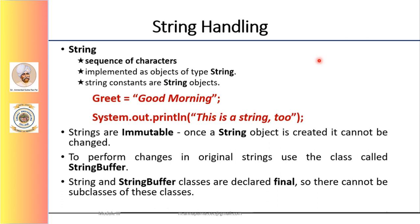The first thing to understand about strings is that every string that is being created is actually an object of type string. Even string constants are string objects. For example, in this assignment statement I have assigned a string constant 'good morning' to greet. This string constant 'good morning' is also a string object. In the next example, I have passed a string 'this is a string' to the print line function, and this particular string constant is also a string object.